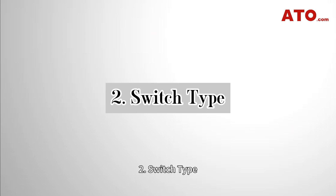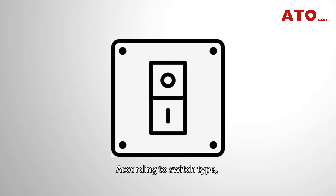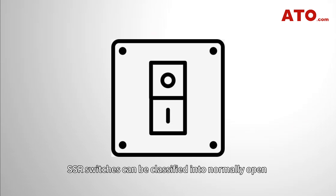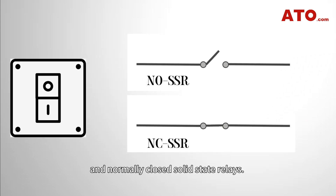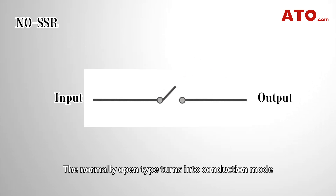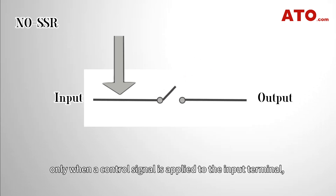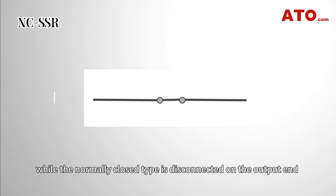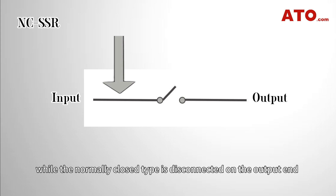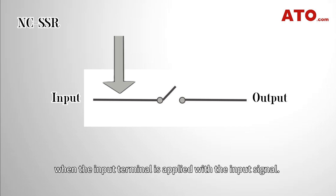2. Switch Type. According to switch type, SSR switches can be classified into normally open and normally closed solid-state relays. The normally open type turns into conduction mode only when a control signal is applied to the input terminal, while the normally closed type is disconnected on the output end when the input terminal is applied with the input signal.